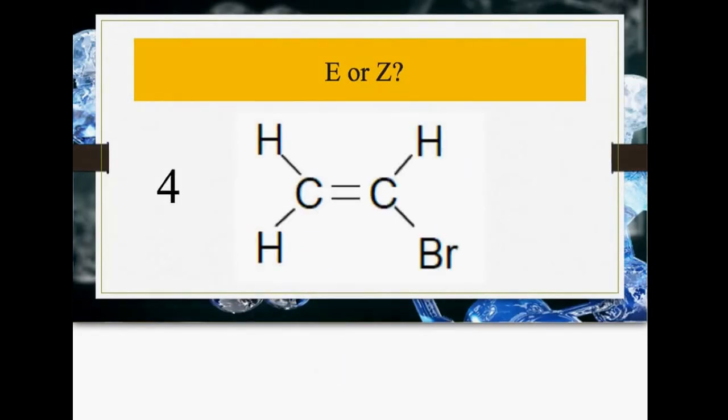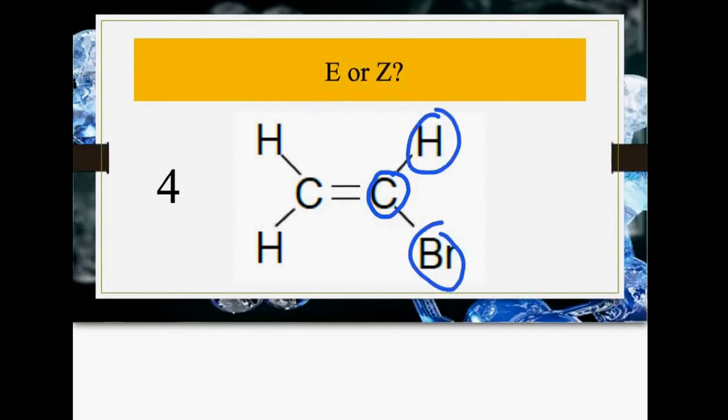Pause the video and have a go. This one doesn't actually show E-Z-isomerism. To have E-Z-isomerism, you need different groups attached to each of the carbons. This carbon has two different groups attached, that's fine. But this carbon has two of the same thing. If a carbon has two of the same thing attached, there is no E-Z-isomerism.